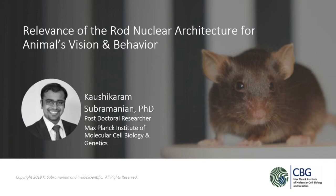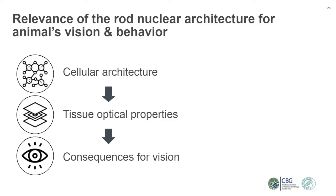Today I will be talking about the relevance of the rod nuclear architecture for animals' vision and behavior. This was my PhD project in the lab of Dr. Moritz Kreising at the Max Planck Institute of Molecular Cell Biology and Genetics. In this study, we have shown that changes in the cell architecture of the retina can have a large impact on the optical properties of the retinal tissue and also significantly improve visual abilities.